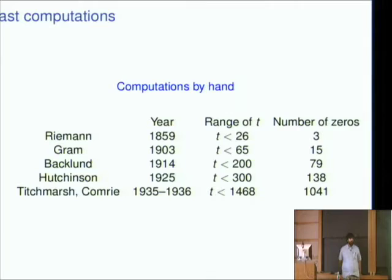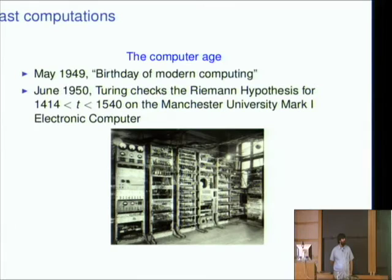The next step up was when the computer age started. One thing I really like about this is that as soon as computers were invented, people started computing the zeta function on computers. So according to Wikipedia, May 1949 is the birthday of modern computing. And in June 1950, Turing checked the Riemann hypothesis just a little bit further than Tishmarch had done.